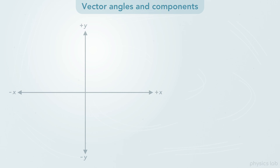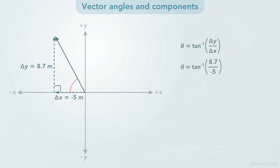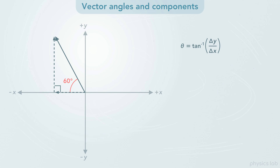One important thing to note is that the sine and cosine functions give us the positive and negative components. But if we're trying to find the angle using the inverse tangent function, it's going to give us a reference angle, and not the angle that's counterclockwise from the positive x axis. For example, if we plug in 8.7 for delta y and negative 5 for delta x, the inverse tangent function gives us negative 60 degrees. The absolute value of that is the reference angle inside the triangle. So the point is, we can just plug in positive values for the components — the opposite side and the adjacent side — and it'll give us a positive reference angle inside the triangle. Then we can figure out the angle counterclockwise from the positive x axis if we need to.